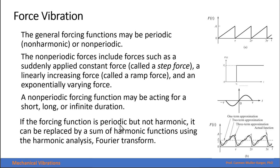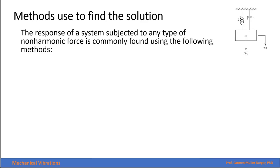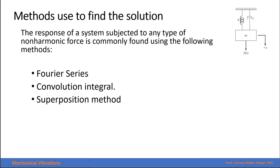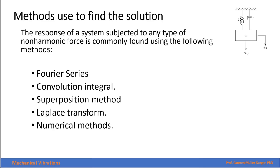If the forcing function is periodic but not harmonic, it can be replaced by a sum of harmonic functions using harmonic analysis, which is the Fourier series. The response of systems subjected to any type of non-harmonic force is commonly found using the following methods: Fourier series — particularly for periodic non-harmonic forces — convolution integral, superposition method, Laplace transform, and numerical methods. I will explain each of these methods in a separate presentation and do examples for each.